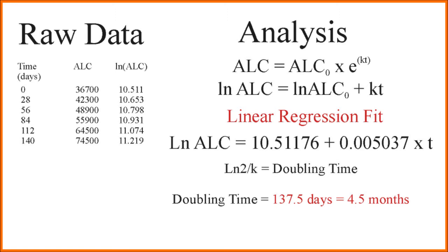When I do that, I get the result here shown under where it says linear regression fit. That the log of the absolute lymphocyte count is equal to 10.51176, which is the logarithm of the initial absolute lymphocyte count where ALC zero was determined by the regression analysis plus 0.005037 times t and the 0.005037 is k, which is our constant. So, that's how we do the regression analysis.